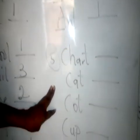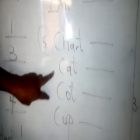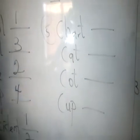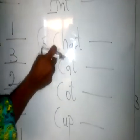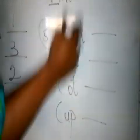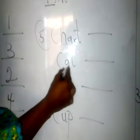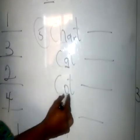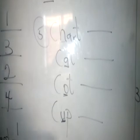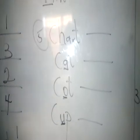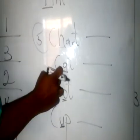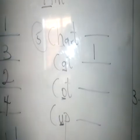Here we have Chat, Cat, Court, Cup — quite complicated too. Everything starts with C. Now when everything in the first alphabet is the same, you move to the next one. Here we have H, A, O, and U as the second letters. You know A will come first, so put 1 for Cat.